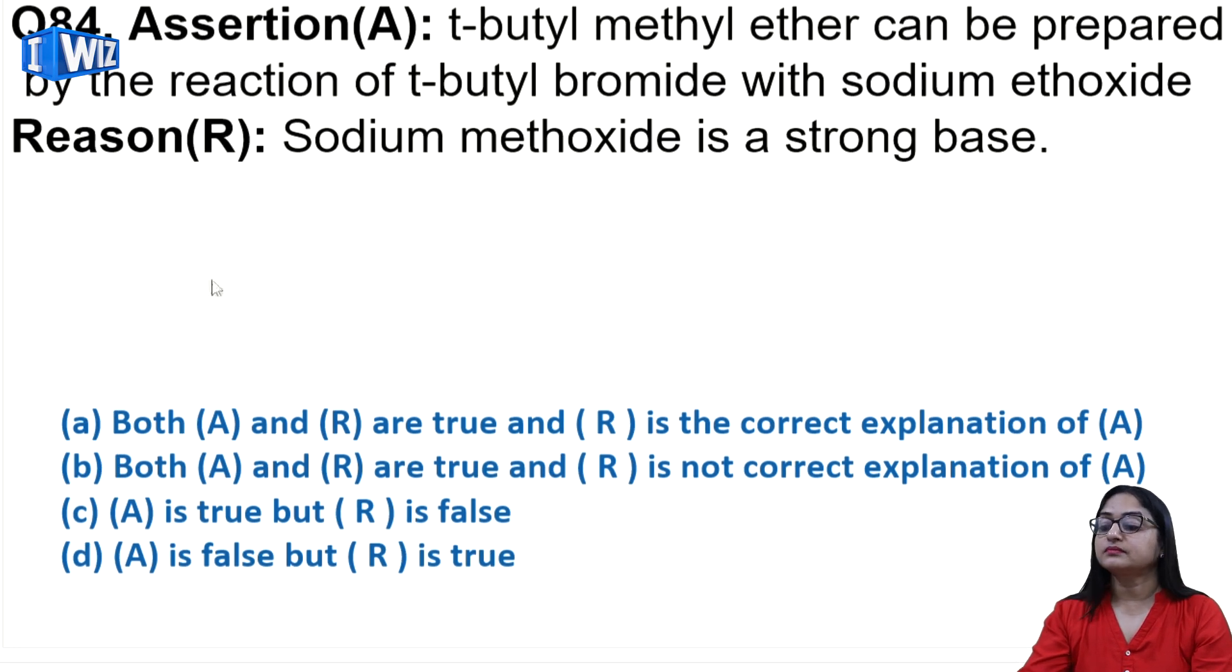Next: tertiary butyl methyl ether can be prepared by reaction of tertiary butyl bromide and sodium ethoxide. No, this is not possible. When you make ether using alkyl halides, you should never use secondary or tertiary alkyl halide, only primary. And sodium ethoxide is a strong base - definitely it is.